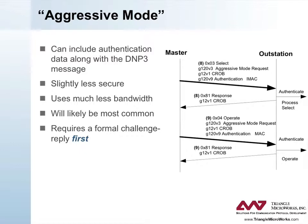Aggressive mode must be supported by all DNP3 secure authentication implementations and will likely be very commonly used. However, it cannot be used exclusively. Before it can be used, the two devices must first perform a challenge-reply sequence. This is required so that the master has the appropriate pseudo-random data in order to calculate the MAC. This does not provide an equal level of replay protection to a complete challenge-reply, but it's still probably adequate while significantly reducing the amount of bandwidth required.